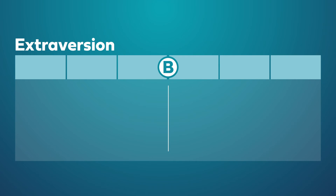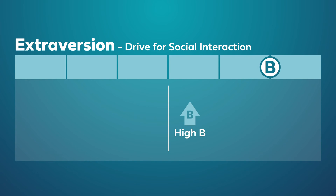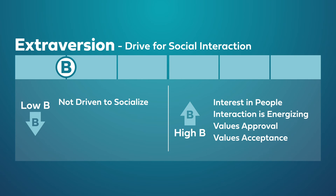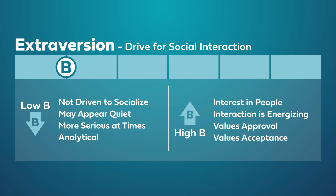Extroversion, identified by the letter B, is the drive for social interaction. An individual with a high B has a sincere interest in people — interacting with others energizes them, and approval and acceptance are paramount for them. While a person with a low B is not often driven by a need for social interaction. They may appear quiet, non-communicative, and serious at times, and are often seen as analytical and matter-of-fact in their own interactions. However, they can become comfortable with a small group of close co-workers, particularly when mutual trust is earned over time.